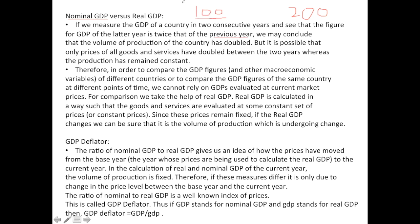But it may also happen that in these two years production has remained the same, but the prices have doubled. How did we arrive at 100? By multiplying the value of production — for example, 20 units are produced and price per unit is 5, so we get 100. But in the second year, if the same 20 units are produced but the price has doubled from 5 to 10, then Nominal GDP has doubled to 200. But has the economy really moved forward? That is a question Nominal GDP does not answer.